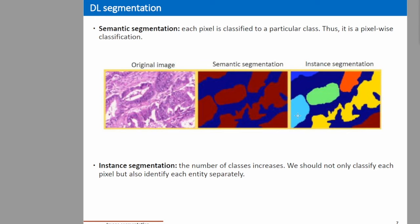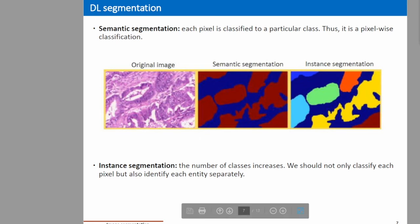However, there is another type of segmentation called instance segmentation. Here we do not assign only two classes to each pixel — we also assign a unique class to each segmented object inside the image, as we can see in this example. So we have two different types of segmentation.